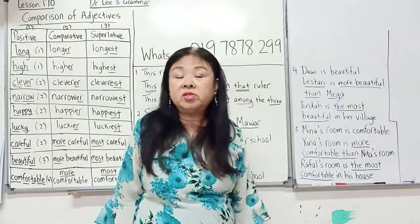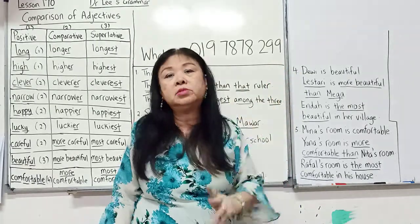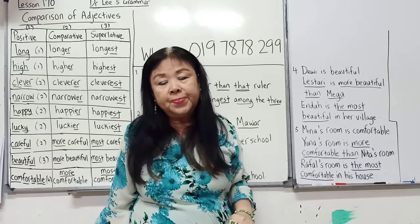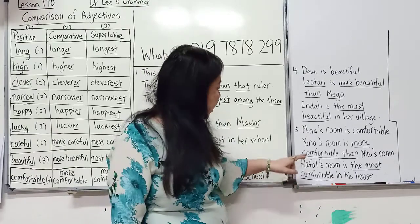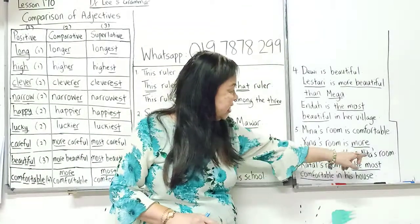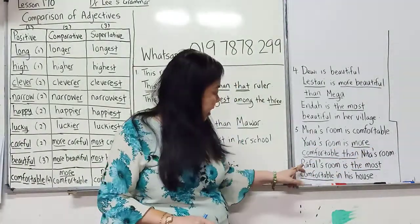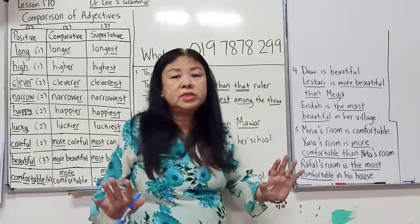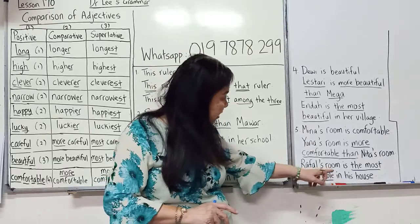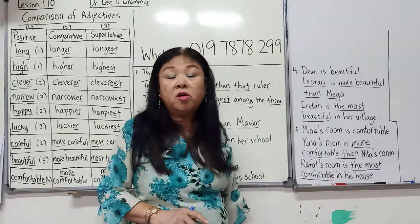Minha's room is comfortable — positive, no comparison. Yuna's room is more comfortable than Nita's room — you use more, so you put than. Rafael's room is the most comfortable in his house — when you use most, you put the in front.